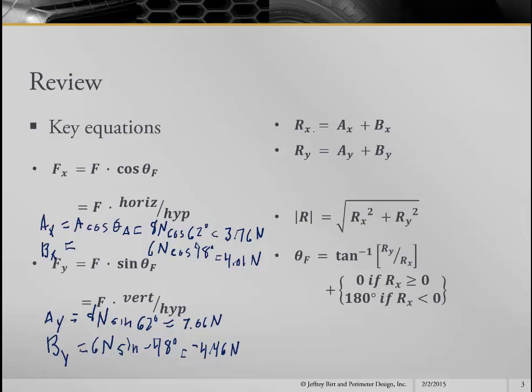So here we're going to use these formulas to find out what the components of the resultant are. So RX equals AX plus BX, and we've got 3.76 Newtons plus 4.01 Newtons, and that equals 7.77 Newtons. For the y's, we have 7.06 Newtons plus a negative 4.46 Newtons, and that yields 2.6 Newtons.